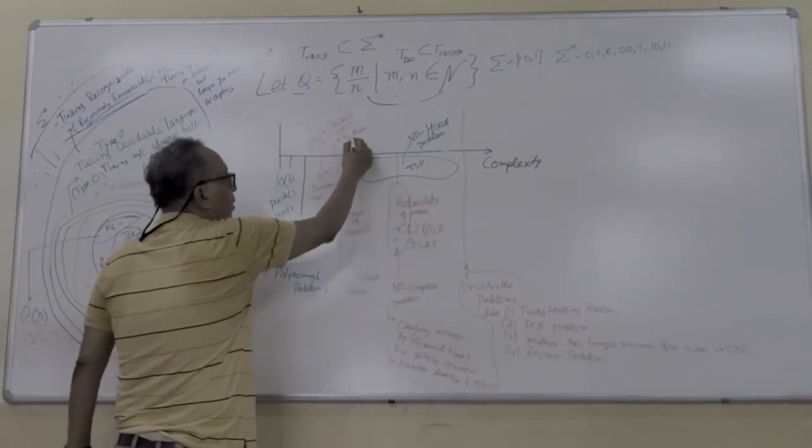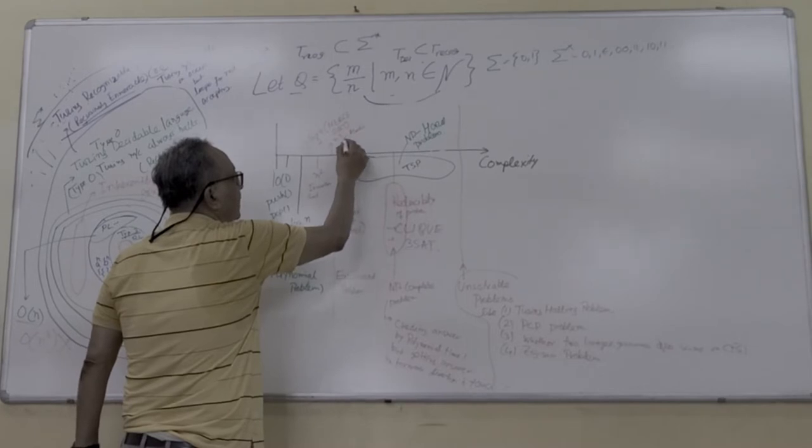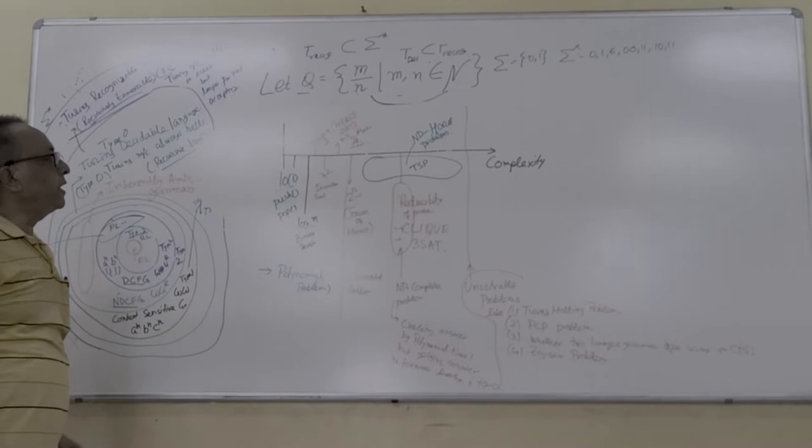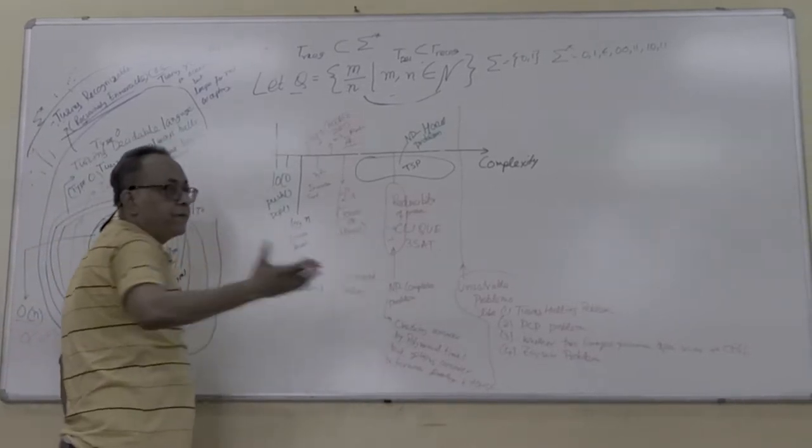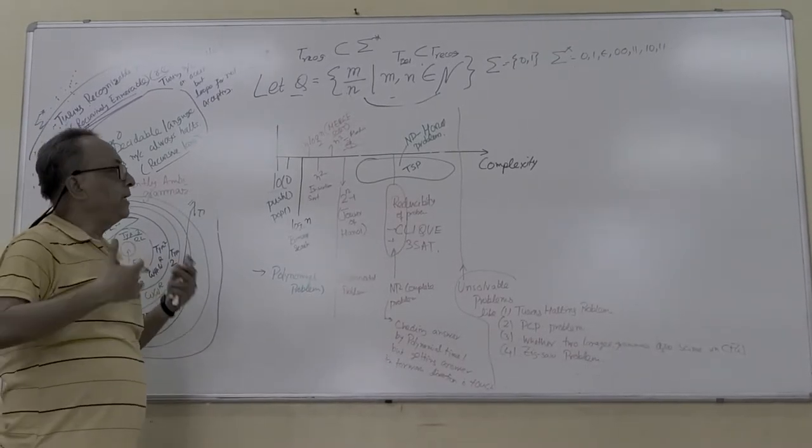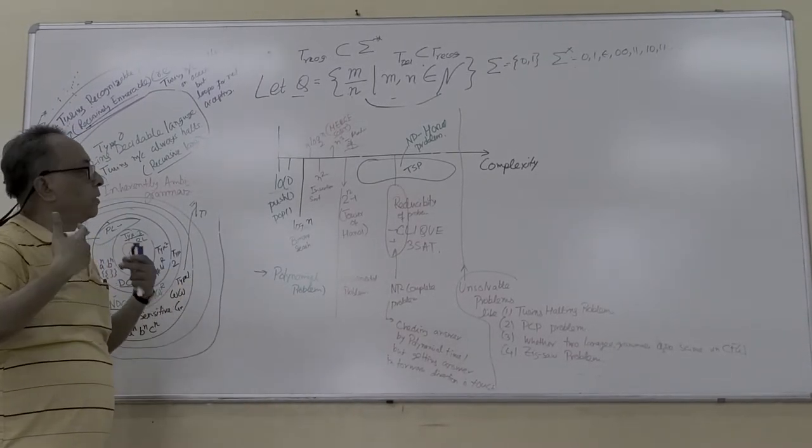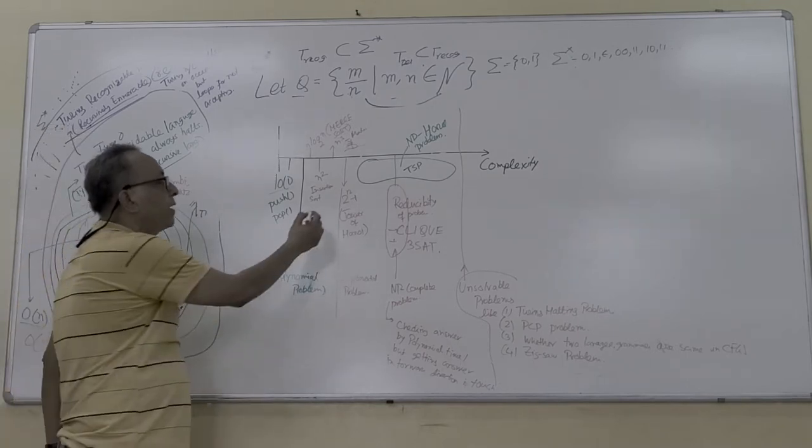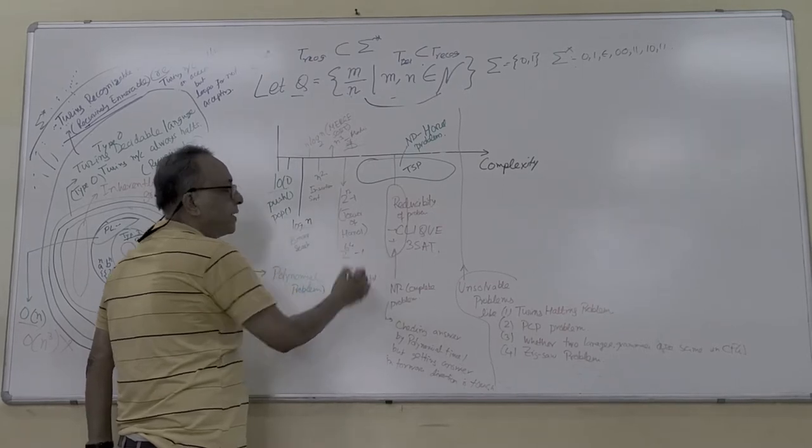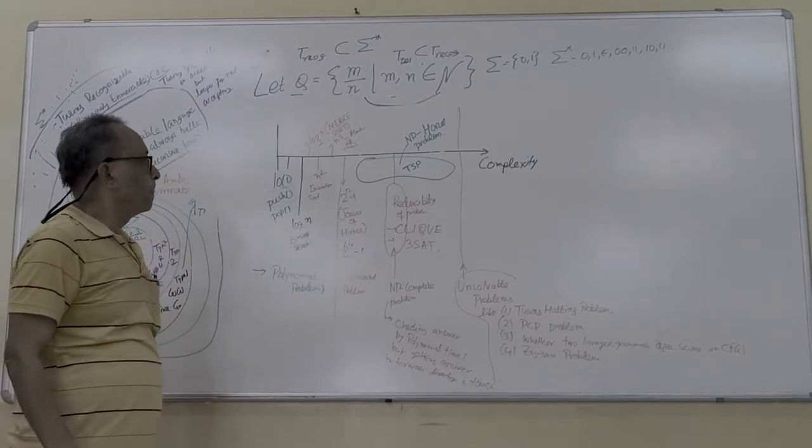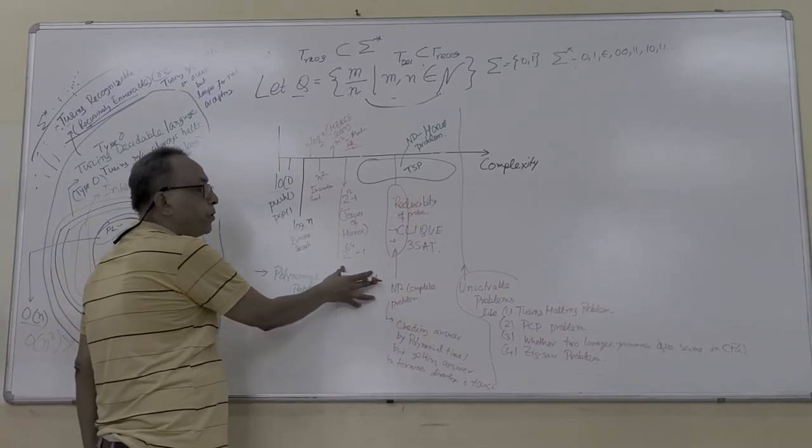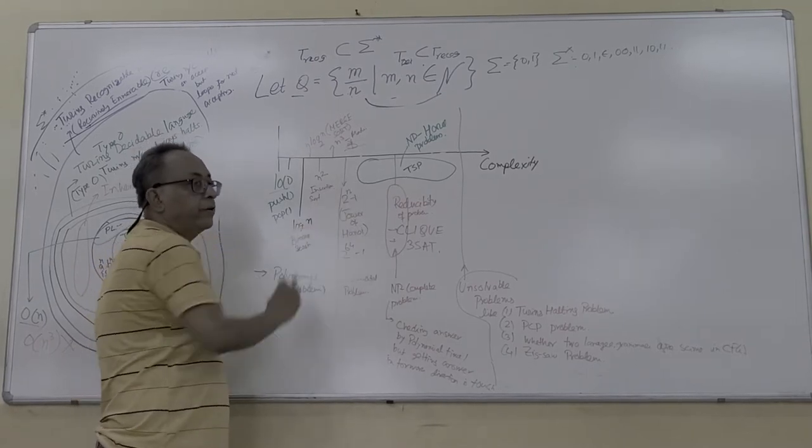But whenever you know the Tower of Hanoi problem, we have to shift three discs to another tower. We have 2 to the power N minus 1. There's a famous story with 64 discs. Two to the power 64 minus 1 steps is a huge amount. This is called exponential. You cannot reduce it. Tower of Hanoi cannot be reduced.